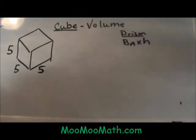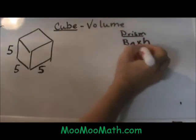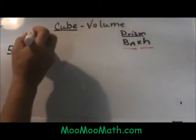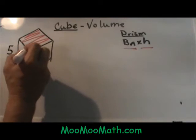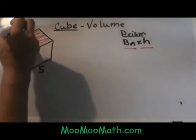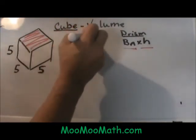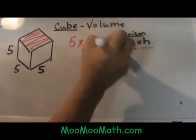The base area of a prism times the height gives us the volume. We need to find the area of the base. The base is just a square that is 5 by 5. So 5 times 5 gives us a base area of 25.